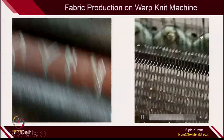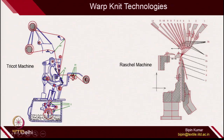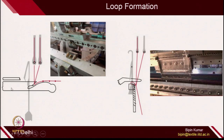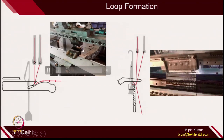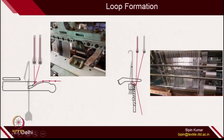The guide bar movement and needle and sinker movement are synchronized for fabric production. In most warp knitting technologies, you will find guide bar, needle, and sinker all working simultaneously for loop formation. In the market, there are 2 types of warp knitting technologies: the tricot machine and the Raschel machine. The principle of loop formation remains the same — there will be interaction of needle and guide in both machines. But let us first understand the principle of the tricot machine.